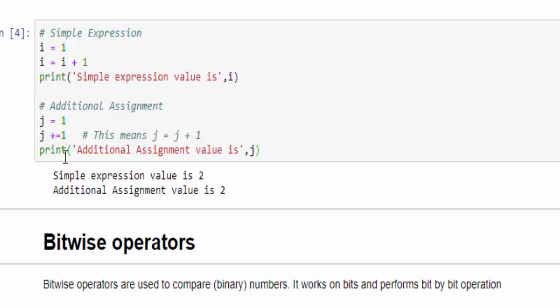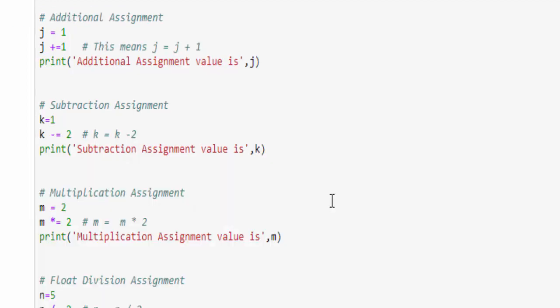So the same way, the value of j is equal to 1 plus 1, j equal to 2. Similarly, I created the shortcut statement for other arithmetic operations. We have already completed the arithmetic operator, just glance at it once in previous videos. In the third example, k equal to 1, k minus equal to 2, which is nothing but k equal to k minus 2, which is decrementing the statement by minus 2. Just guess what will be the output: k equal to 1 minus 2, we will get the output minus 1.